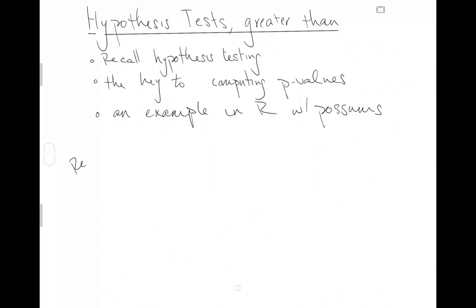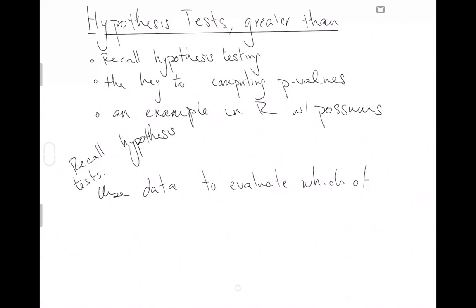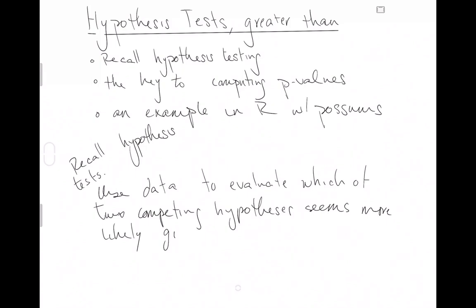So let's recall hypothesis tests. We want to use data to evaluate which of two competing hypotheses seems more likely given the evidence we have. This is just a statistical method that helps us determine which of two hypotheses seems more likely given the evidence we have — given some data, which of these two hypotheses seems more likely.